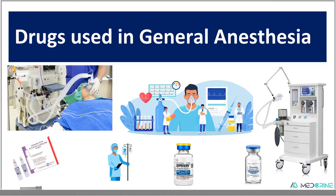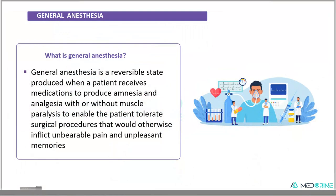Hello and welcome. Today we shall be looking at the common drugs that are used in general anesthesia. General anesthesia is a reversible state that is produced when a patient receives medications or drugs to produce amnesia and analgesia, with or without muscle paralysis. This enables the patient to tolerate surgical procedures that would otherwise inflict unbearable pain and unpleasant memories.